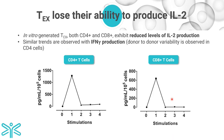We then focused on assessing the functional capacity of these cells. We assessed the ability of these cells to produce cytokine after each stimulation, with the data shown here for IL-2. After the first stimulation, there was a rapid decrease in the ability of cells to produce IL-2 — normalized to cell number — and we confirmed this at the transcriptional level with RNA sequencing. A similar profile was also observed in interferon-gamma production, though more gradual compared to IL-2.